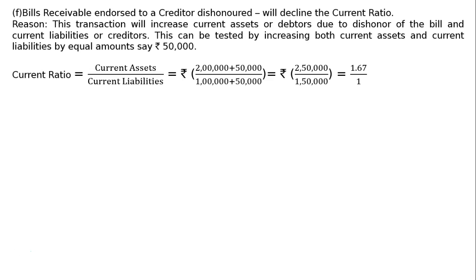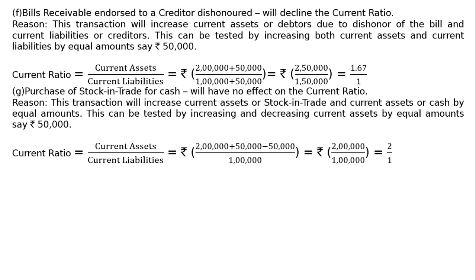Part G: Purchase of stock in trade for cash will have no effect on the current ratio. Reason: this increases one current asset (stock) and decreases another current asset (cash) by equal amounts — both within current assets. Tested: Current ratio = (Rs. 2 lakh + Rs. 50,000 − Rs. 50,000) / Rs. 1 lakh = Rs. 2 lakh / Rs. 1 lakh = 2:1. The ratio remains the same; there is no effect.